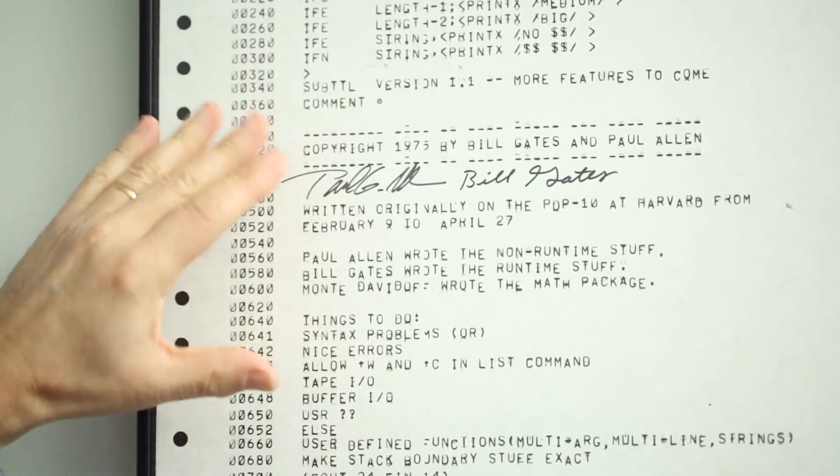Paul Allen was not a Harvard student, but he had been a high school classmate of Bill Gates. If you come and look at the listing, you'll actually find a third name, Marty Davidoff, who was Gates's classmate here at Harvard.